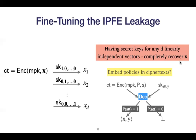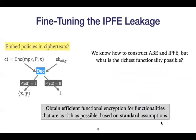So a natural question is whether we can tune this leakage somehow. We consider a combination of inner product functional encryption and attribute-based encryption. Ciphertexts now take an additional parameter — the policy p — and secret keys also have an additional parameter, the attributes. When we decrypt, if the policy is satisfied, we get the inner product; otherwise we should get nothing. Alternatively, one can ask: what is the richest functionality we can achieve from standard assumptions?